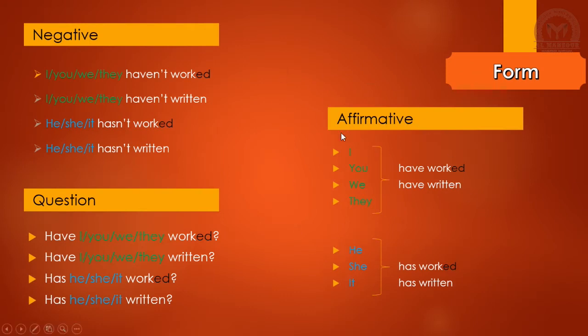Let's start with the present perfect in affirmative form: subject plus have or has plus the verb in past participle. If it's singular form, it takes has; if it's are, you, we, they, it takes have. In negative form, we just add not after have or has, like we haven't worked, we haven't written, she hasn't worked, she hasn't written.